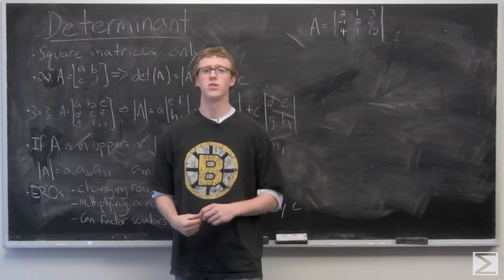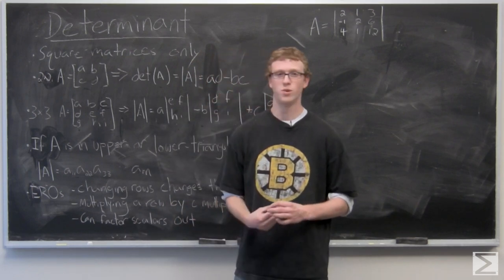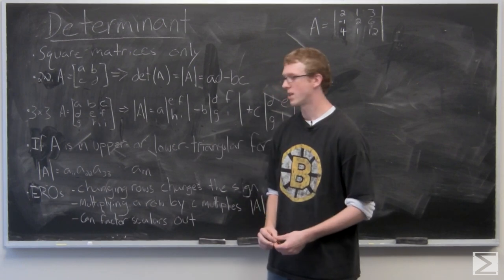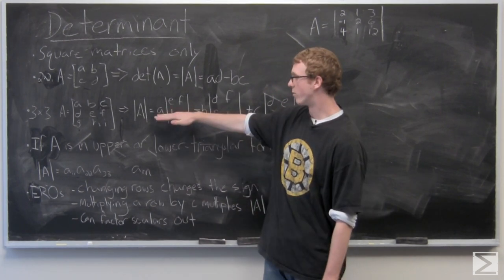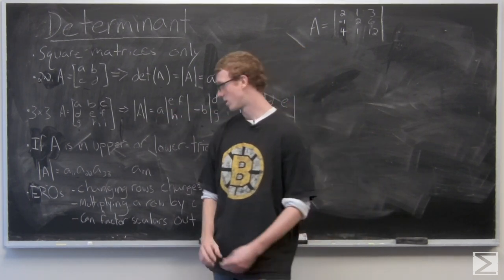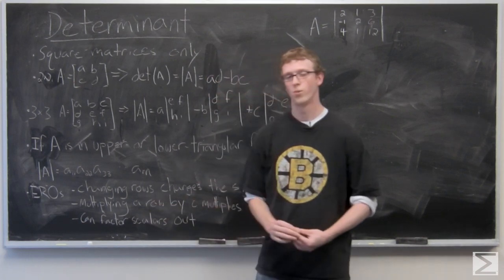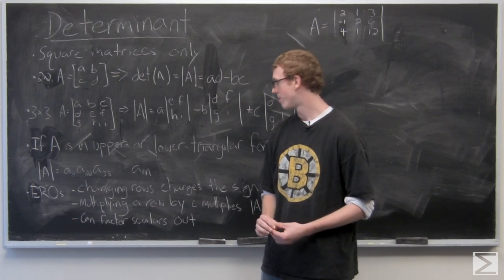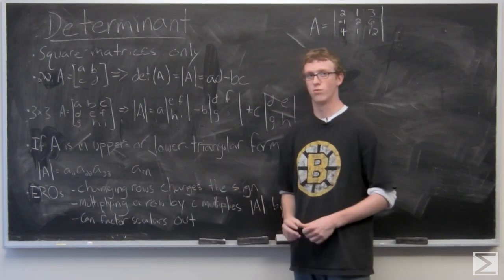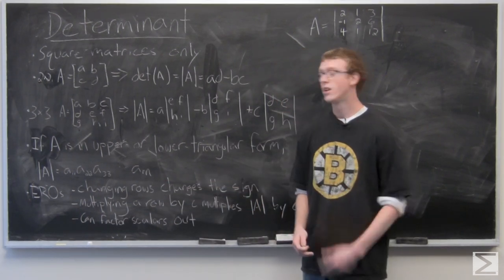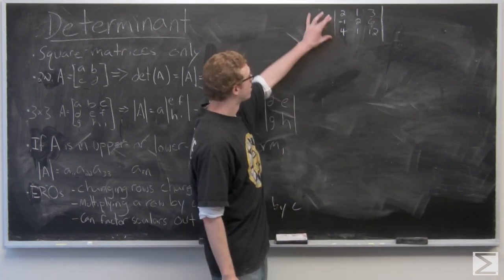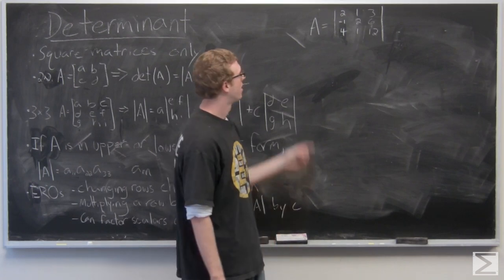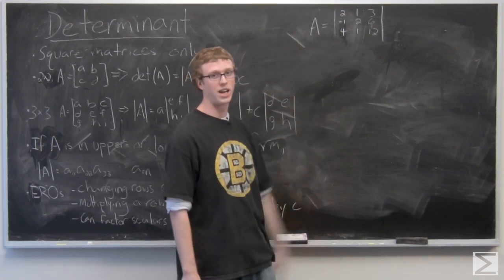And we can use elementary row operations to get the matrices in upper or lower triangular form, make it a little easier sometimes to work with rather than working with the 3x3 matrix example. So when we do elementary row operations, they will actually switch the value of the determinant. When you change the rows, it changes the sign.